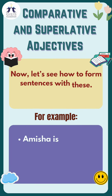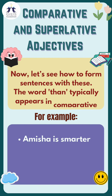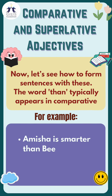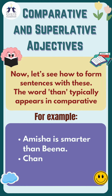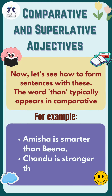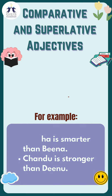Now let's see how to form sentences with these. The word 'than' typically appears in comparative sentences. For example: Amisha is smarter than Bina. Chandu is stronger than Dinu.